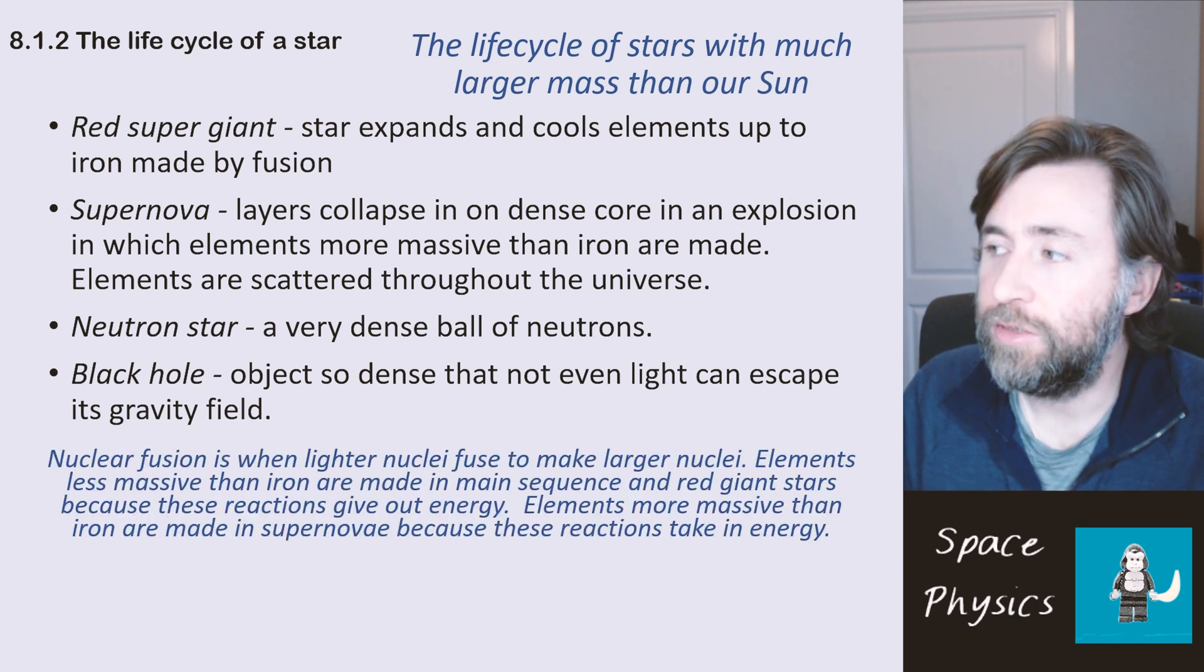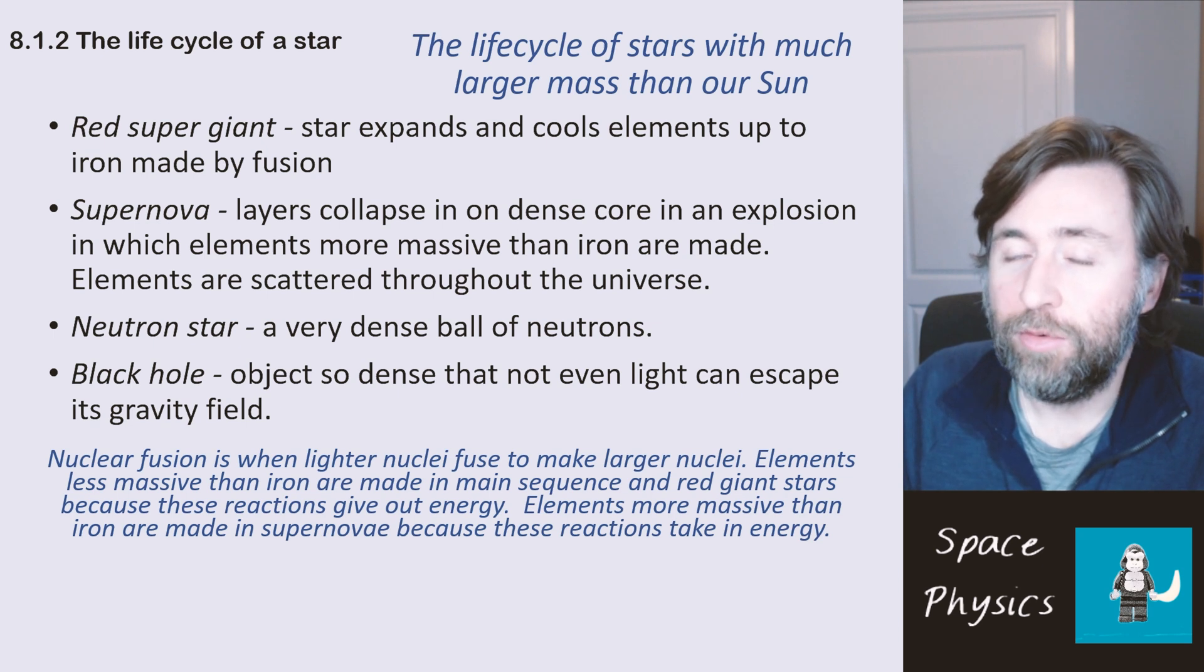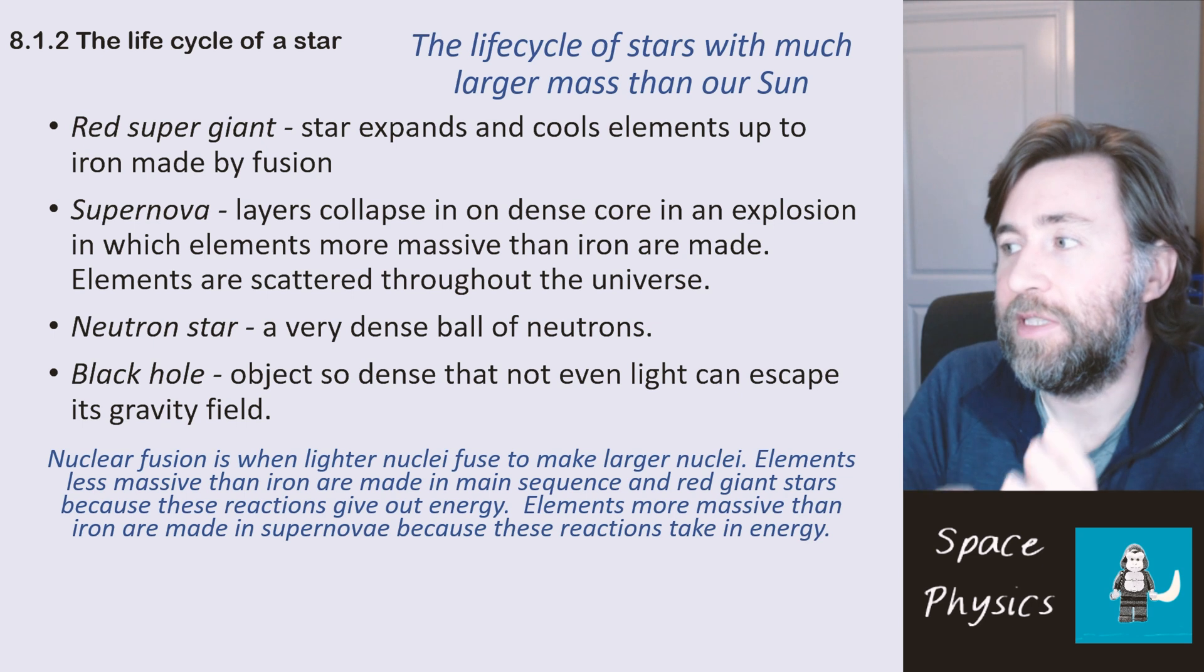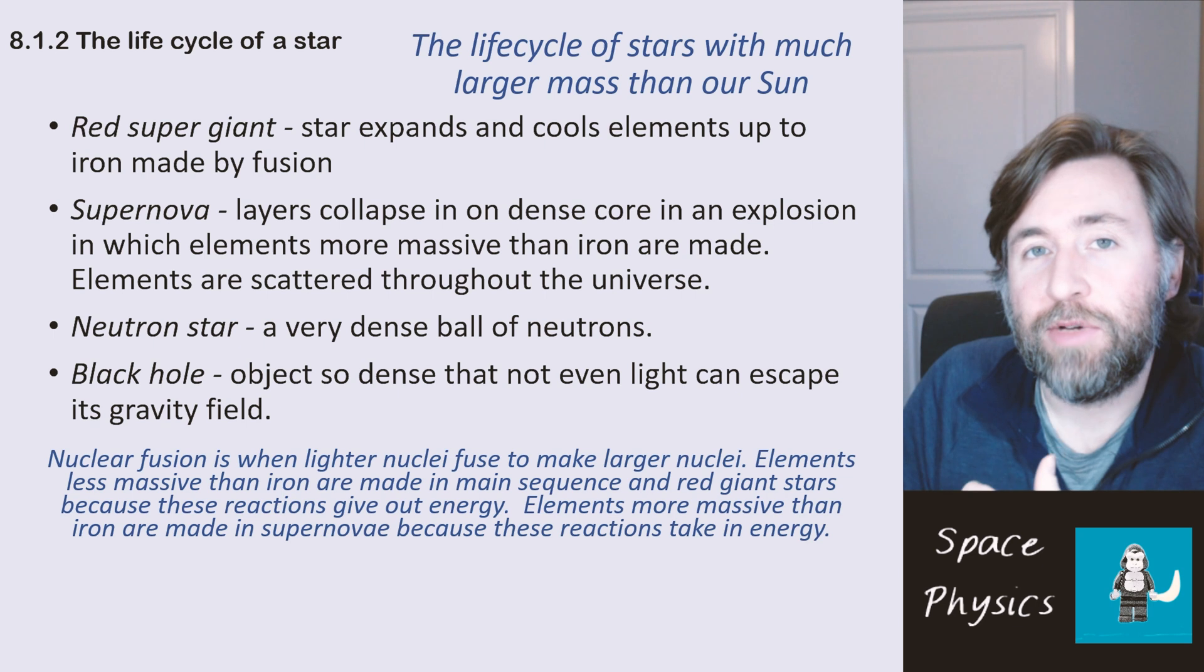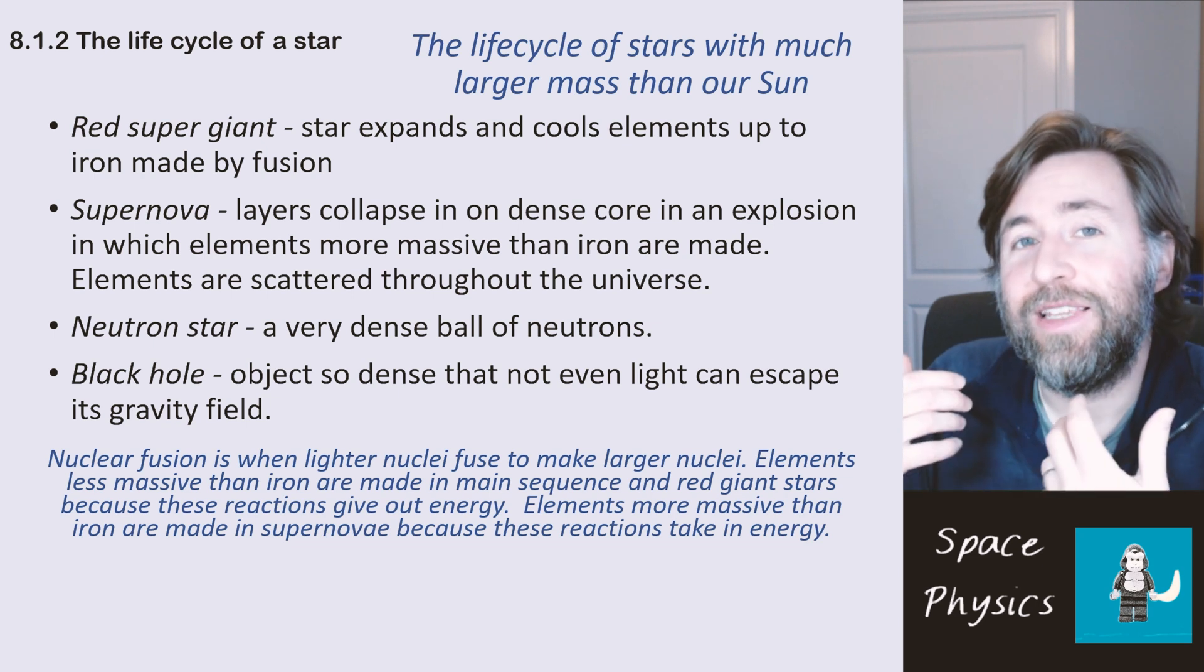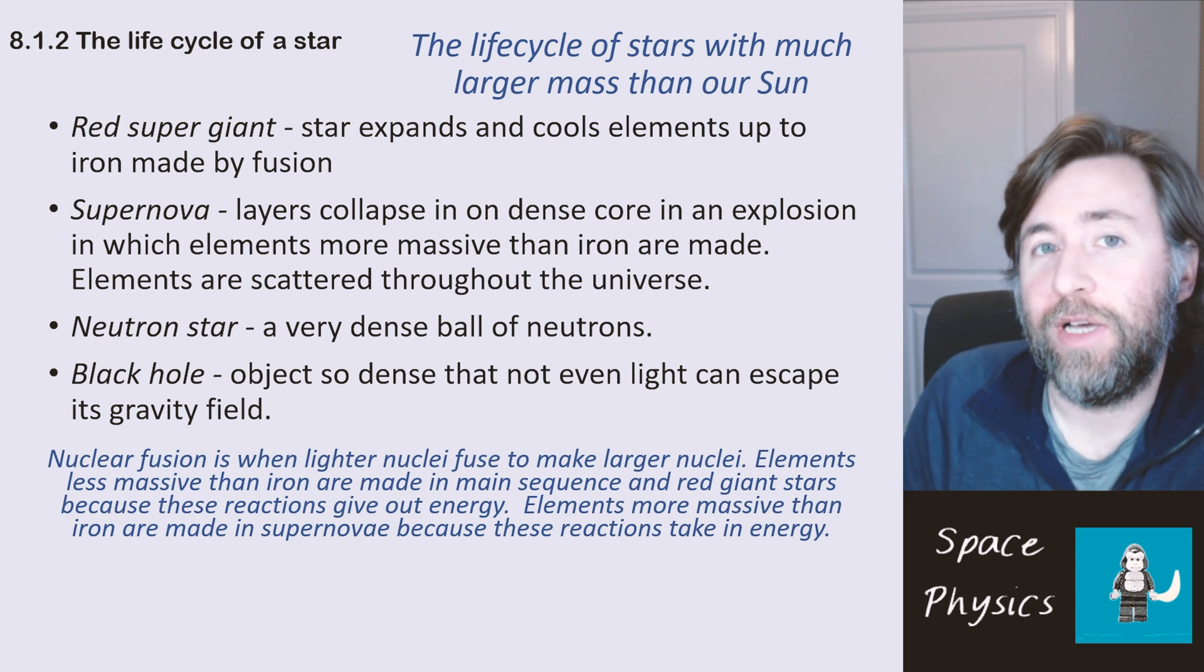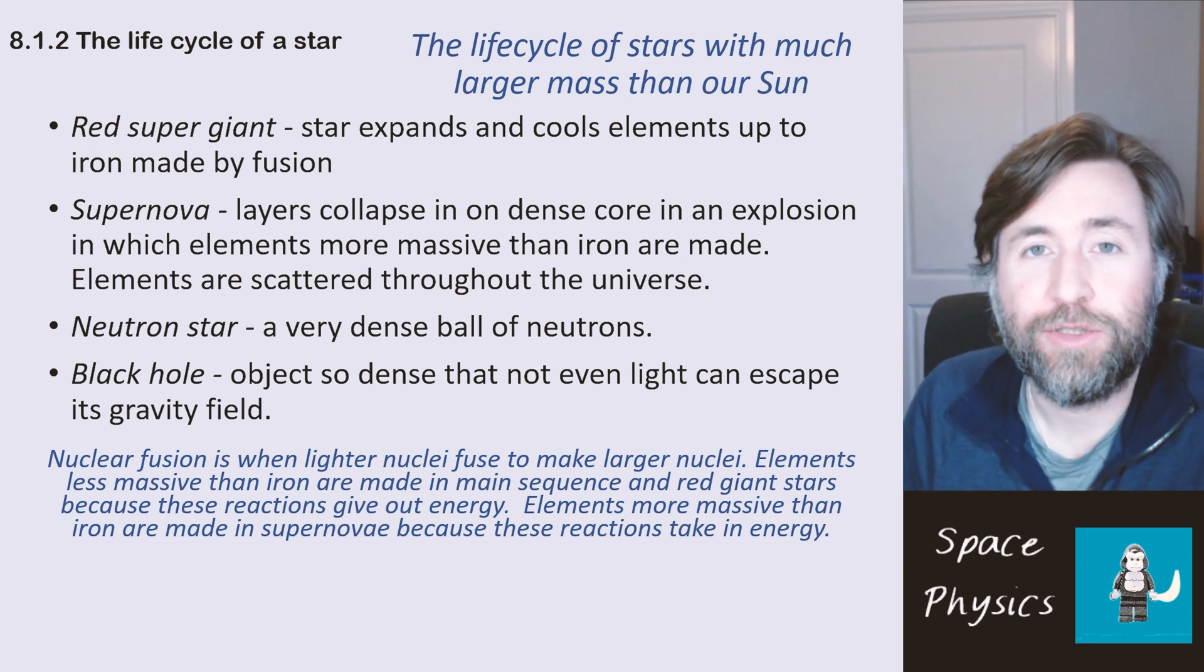So this is a little bit of a link into your atomic structure unit. Where we talk about radioactivity. And you need to therefore know and be able to use in this section the idea that nuclear fusion is when lighter nuclei fuse to make larger nuclei. Remember that elements less massive than iron can be made in main sequence stars and red giant stars. And that's because these reactions will actually give out energy. Whereas elements that are more massive than iron are made in supernovae. Because they require energy to be taken in to make those larger elements. Those fusion reactions to make the heaviest elements actually take in energy. So that can only happen during a supernova.